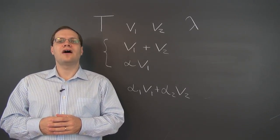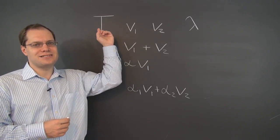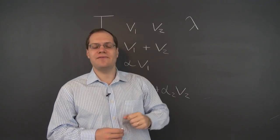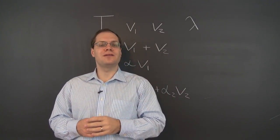Here is the very simple proof of the fact that for any linear transformation T, the set of all eigenvectors corresponding to the same eigenvalue lambda form a linear space.